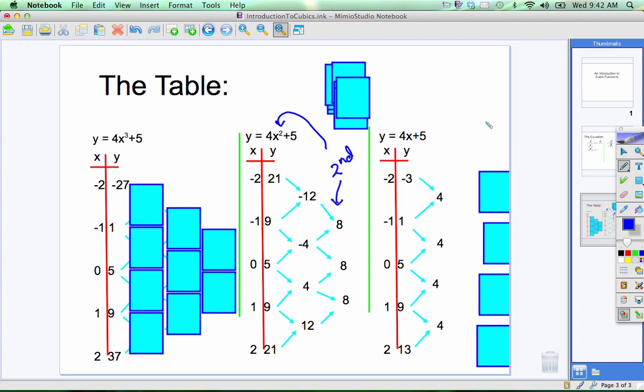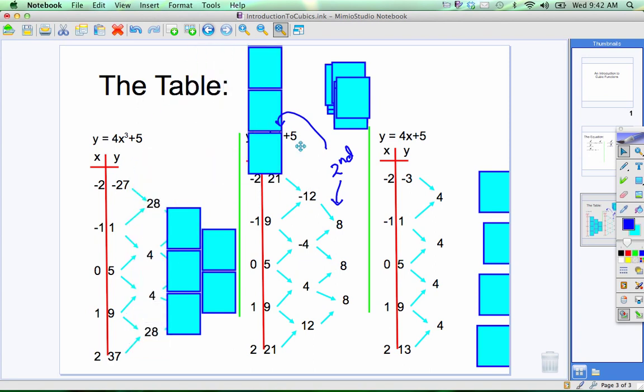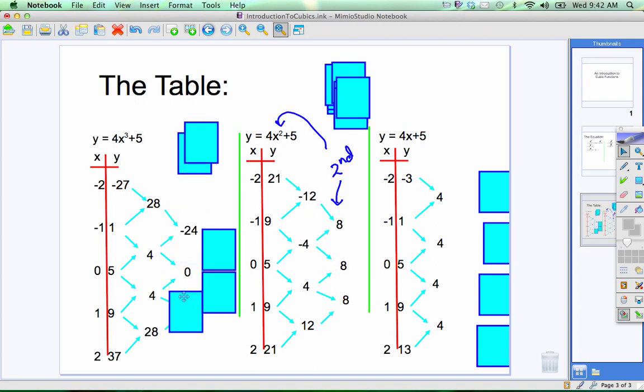So second differences are the same for quadratics. Now, you're probably going to guess with cubics. The first differences do not stay constant. Second differences, let's see, down 24, no change, up 24, no difference there. But the third difference is 24 and 24, those are the same.